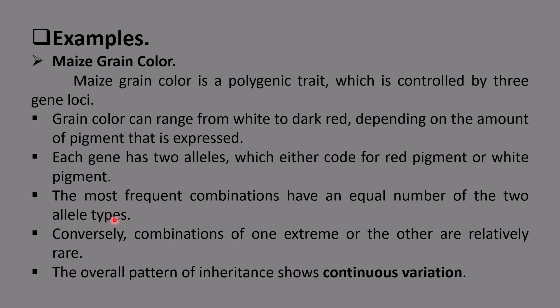Examples include height, weight, and pigmentation of various parts of the plant. A classical example is maize grain color as a polygenic trait, controlled by three gene loci — three independent pairs of genes. The green color can range from white to dark red. The extreme recessive character is white and the extreme dominant character is dark red, and the color expressed depends on the amount of pigment produced.